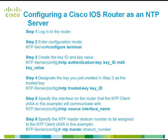Configuring a Cisco IOS router as an NTP server involves the following steps. The first step is to log in to the router. The second step is to enter configuration mode using the command configure terminal. The third step is to create a key ID and key value. The fourth step is to designate the key as the trusted key. The fifth step is to specify the interface on the router that the NTP client will communicate with. The sixth and final step is to specify the NTP master stratum number to be assigned to the NTP client.